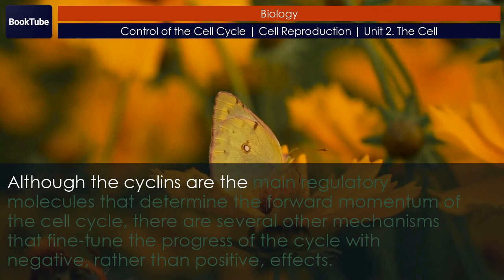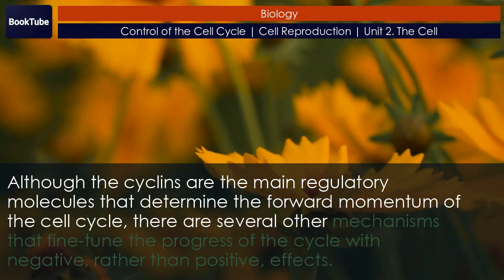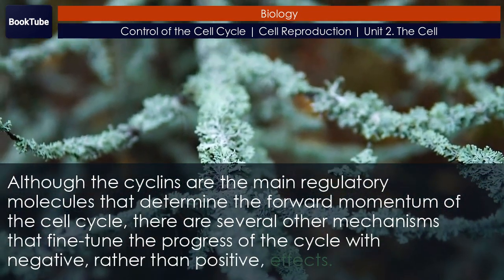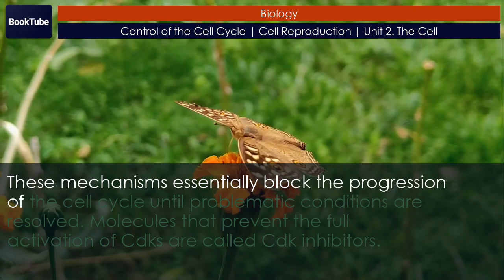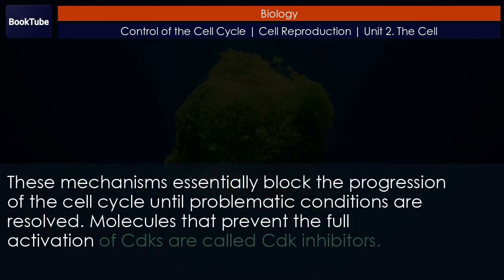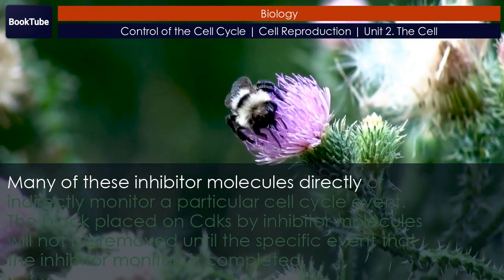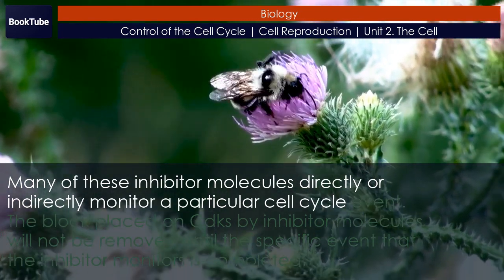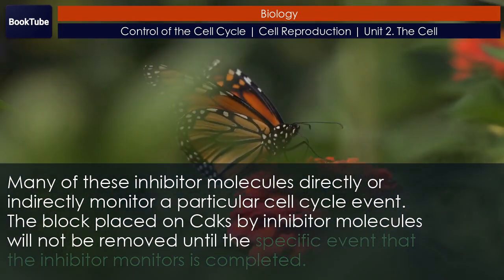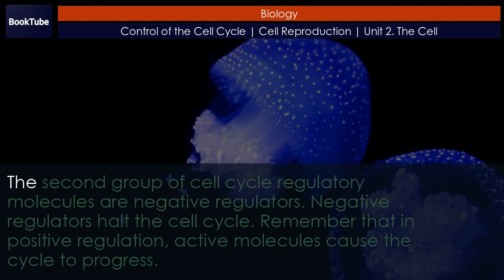Although cyclins are the main regulatory molecules that determine forward momentum of the cell cycle, several other mechanisms fine-tune the cycle with negative rather than positive effects. These mechanisms block progression of the cell cycle until problematic conditions are resolved. Molecules that prevent the full activation of CDKs are called CDK inhibitors. Many of these inhibitor molecules directly or indirectly monitor a particular cell cycle event, and the block on CDKs will not be removed until that monitored event is completed.